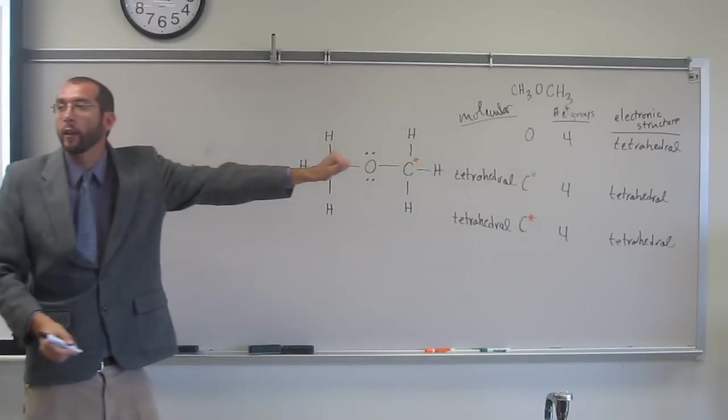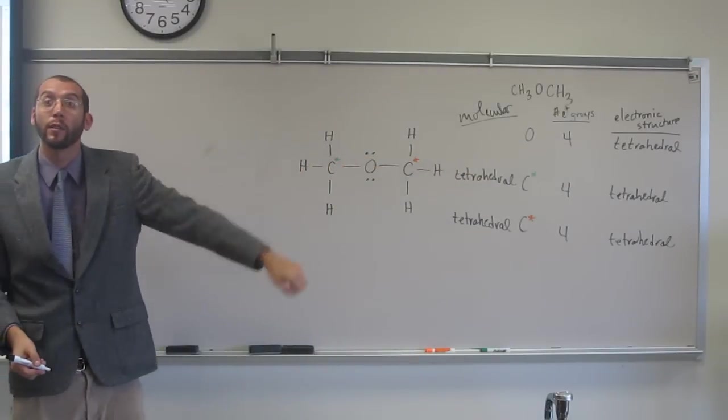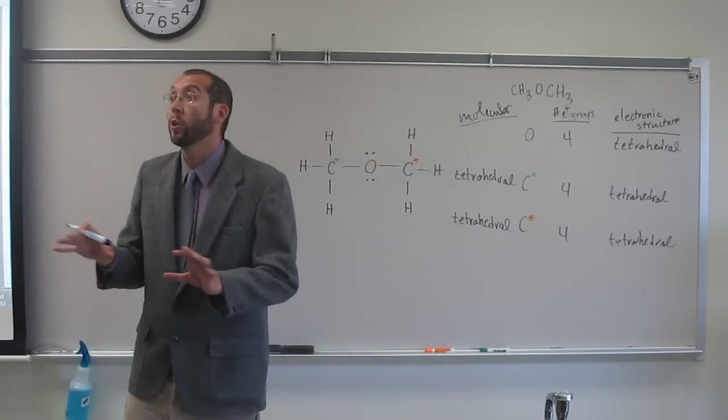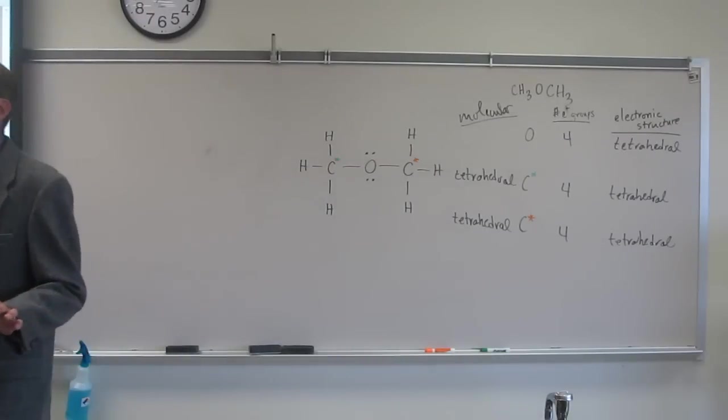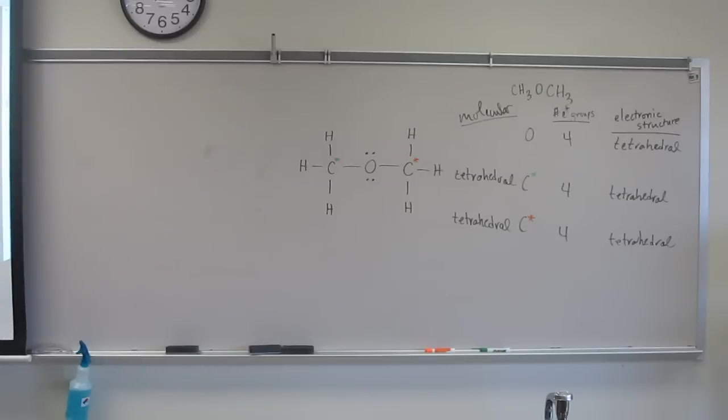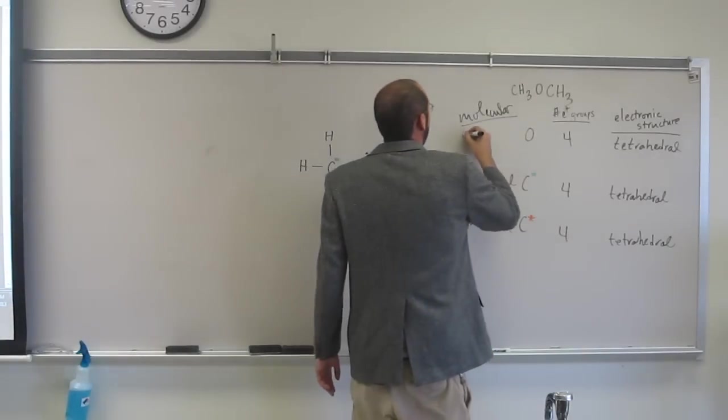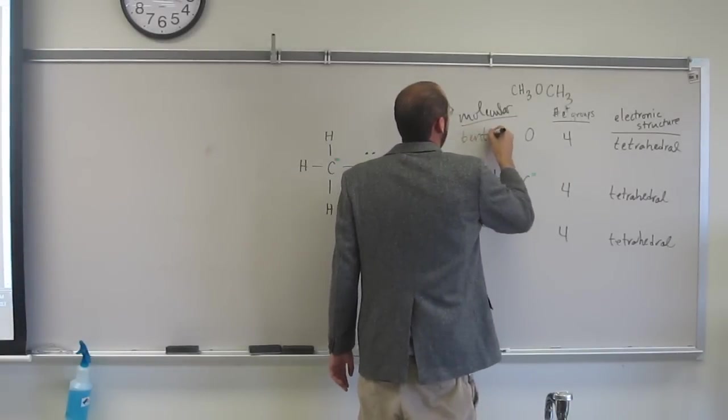And the oxygen, what is that going to be? Bent. Why? Because it's got two lone pairs and two atoms, right? So if it only had two atoms, what would it be? Linear. Linear, right? So if it has no lone pairs, then it would be linear. But since it's got those two lone pairs, it's going to be bent.